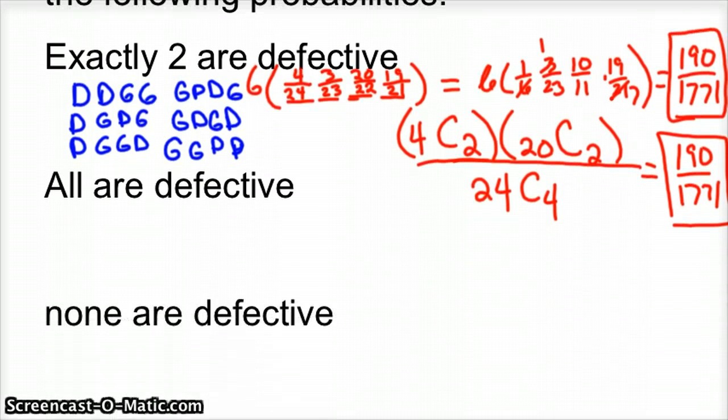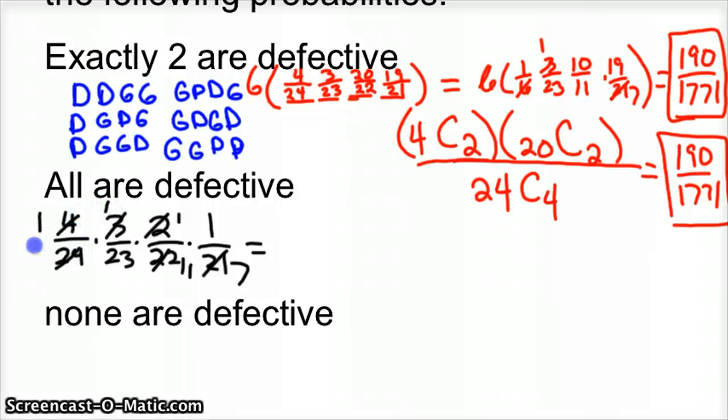Now I was looking at this one already. If all are defective, if all four are defective, we would have 4 out of 24 times 3 out of 23 times 2 out of 22 times 1 out of 21. That's all four being defective, no good ones at all. Then you reduce that, that'd be 1/11, that'd be 7 and 1, 1 and 6.